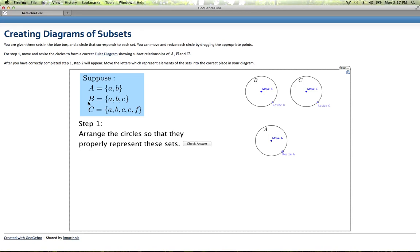Both a and b are in B. That means that set A has to be a subset of set B, which means that this circle needs to be entirely inside of this circle. So first I'm going to make B a little bit bigger, and I will move it so that A is entirely inside of it.